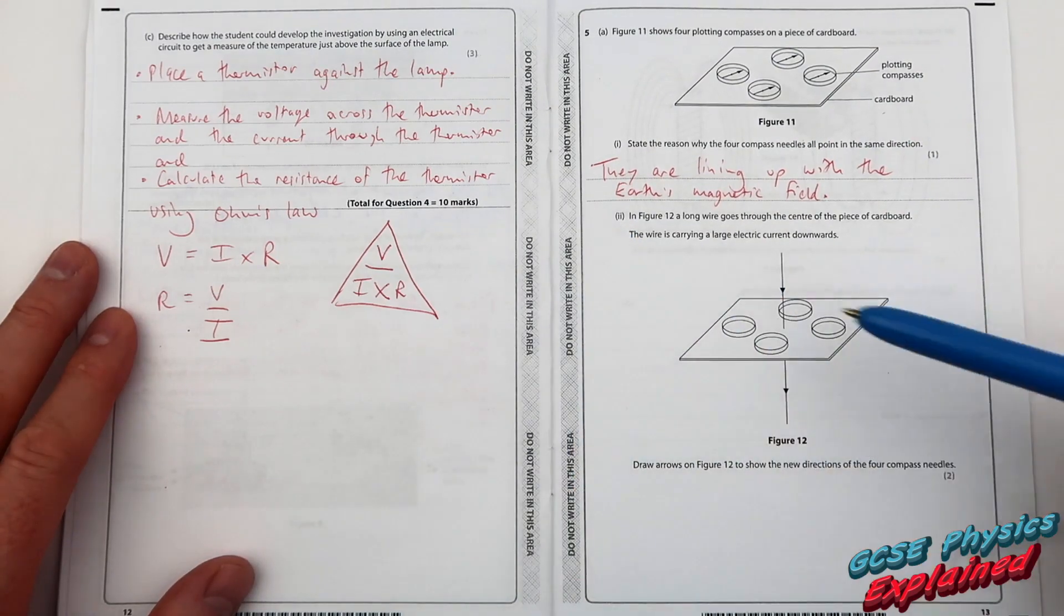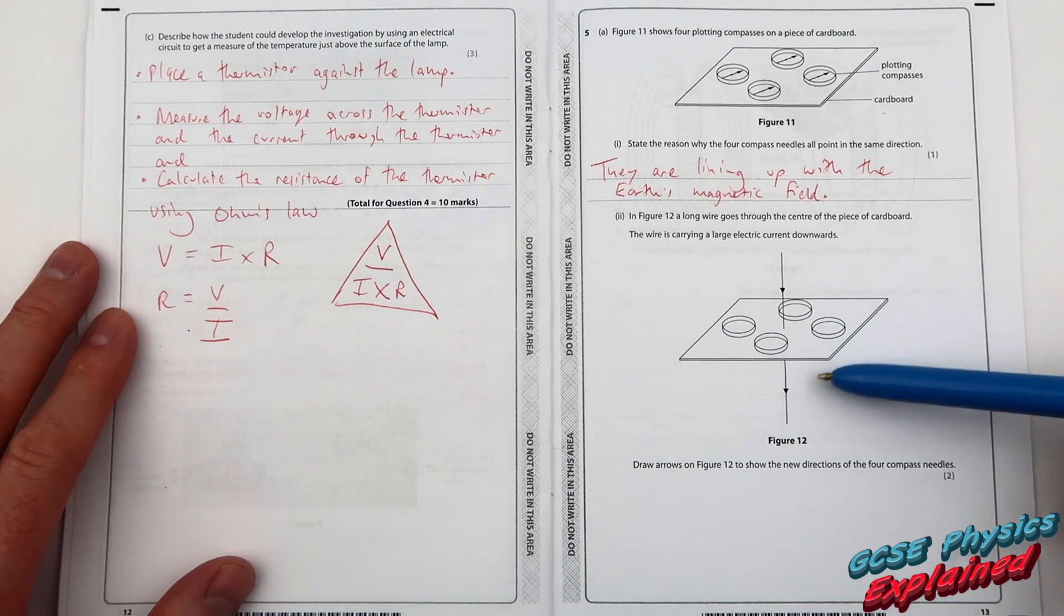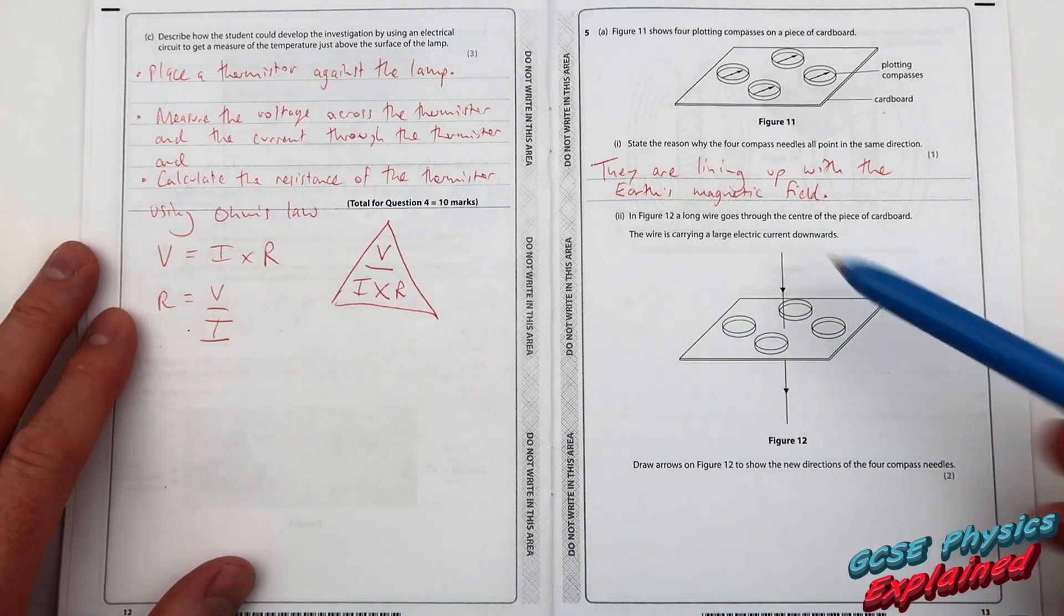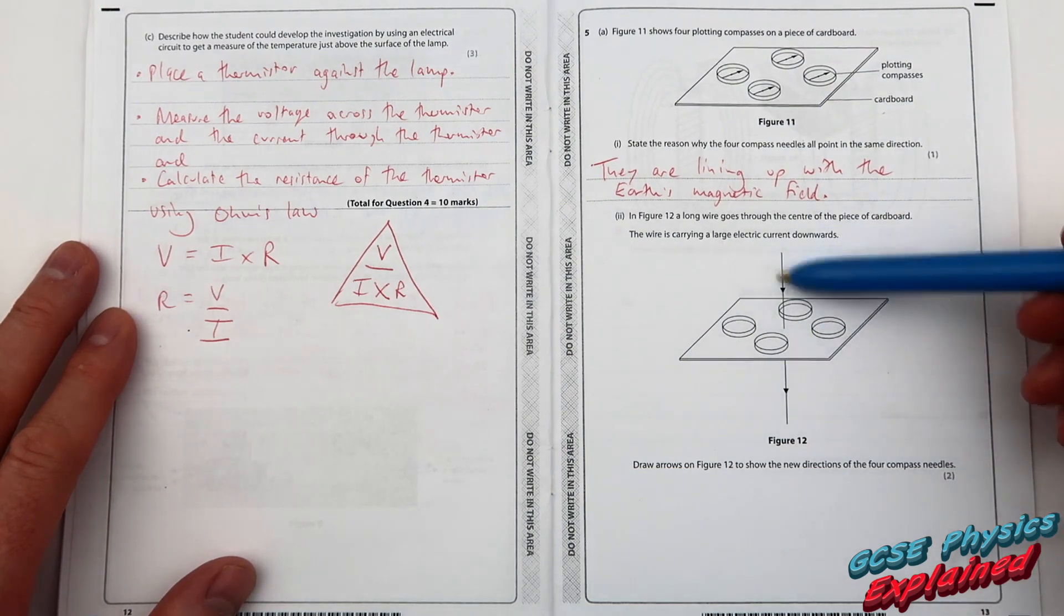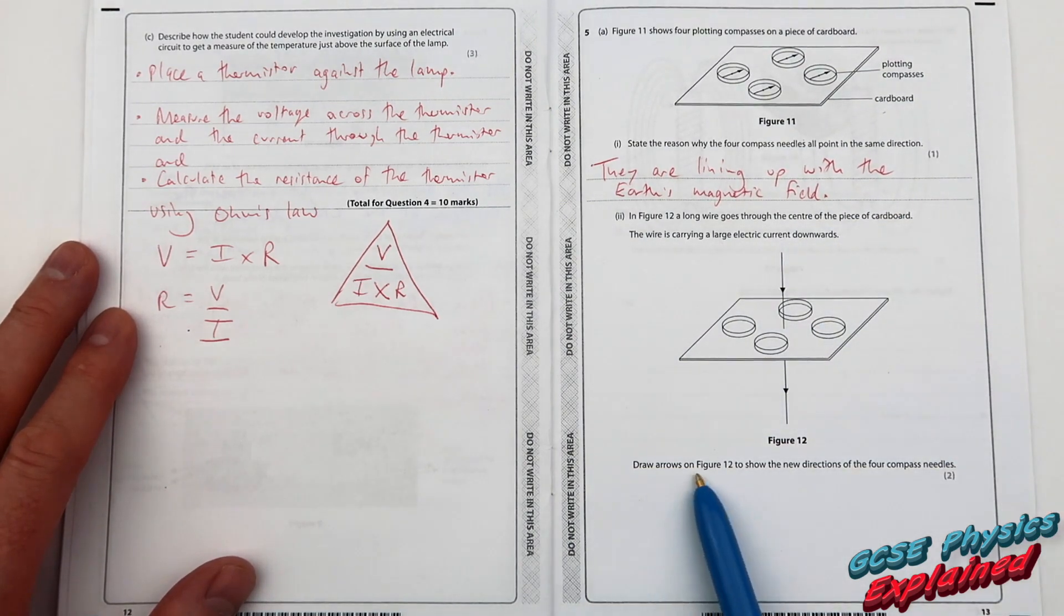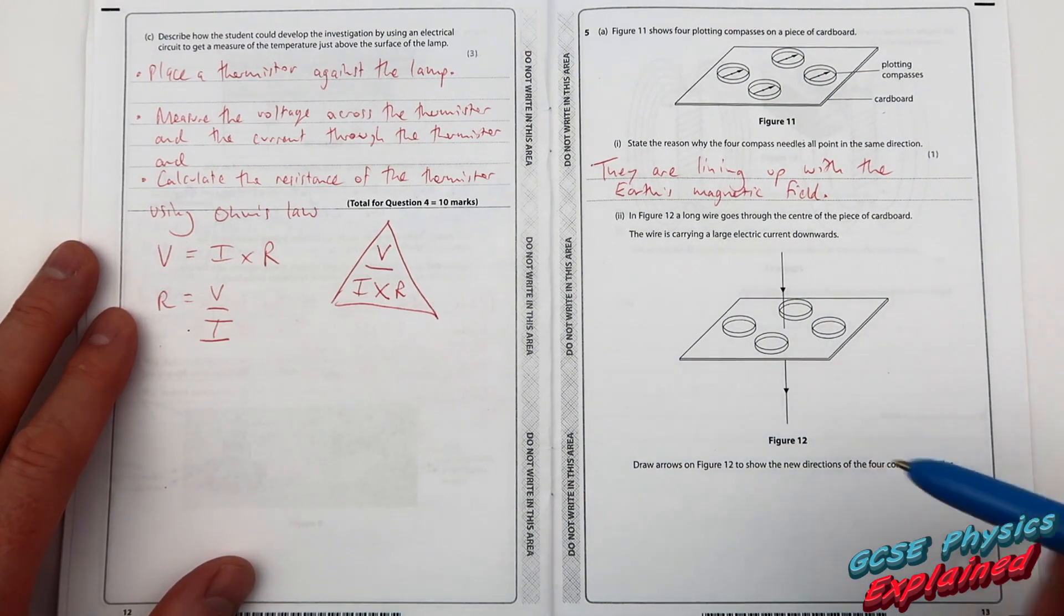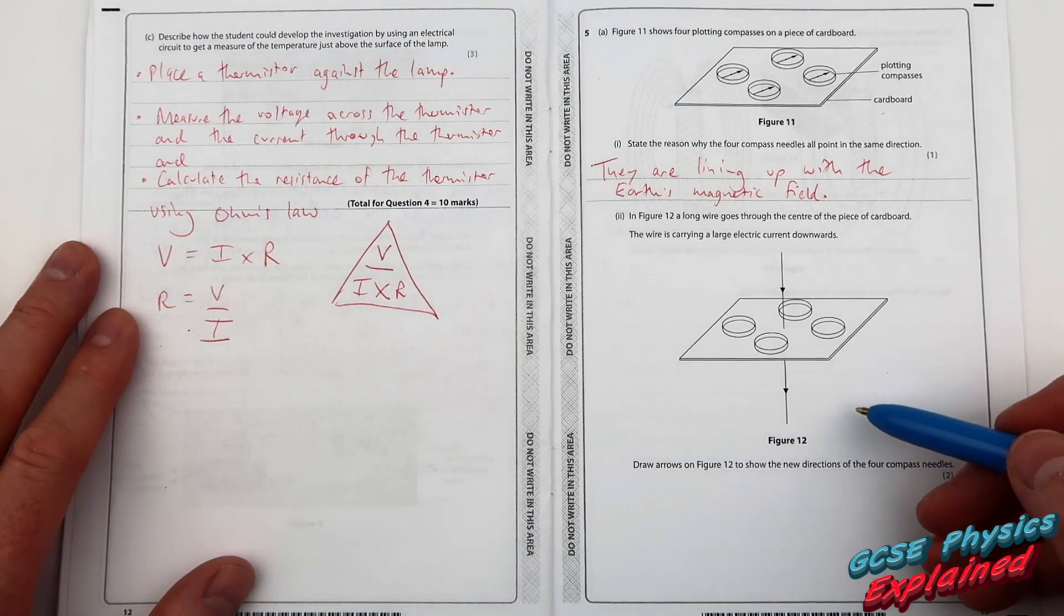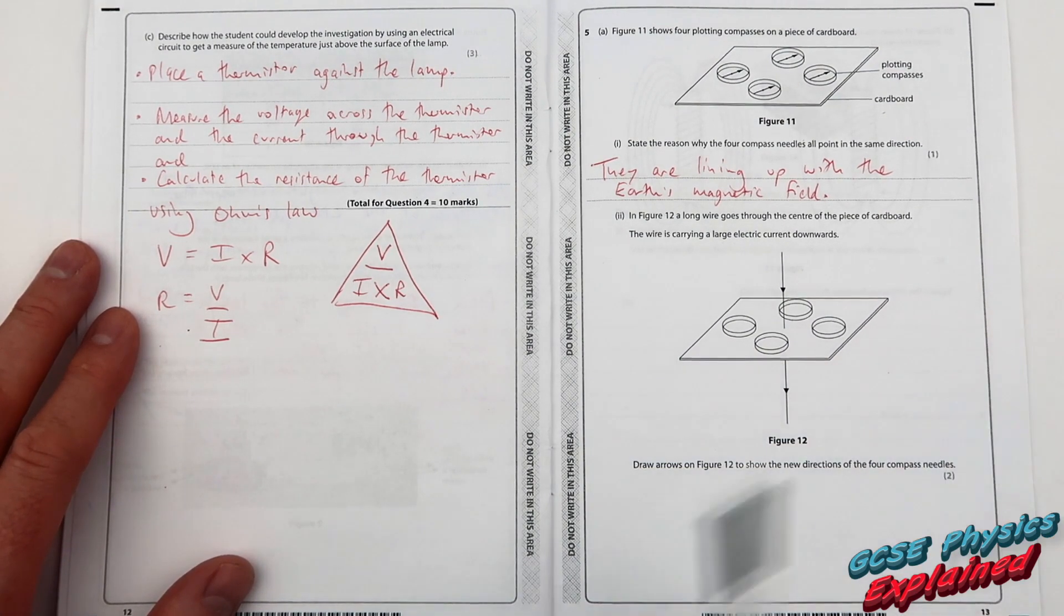Part two. In figure 12, a long wire goes through the centre of the piece of cardboard. The wire is carrying a large electric current downwards. Draw arrows on figure 12 to show the new directions of the four compass needles. I've got a video on this. Click the link at the top. It's electromagnetism. What we're using is the right hand grip rule which shows you the current.